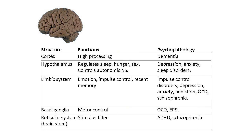Obsessive compulsive disorder and schizophrenia may also involve the limbic system. The basal ganglia is involved in motor control, and is maybe implicated in OCD and also in EPS — extrapyramidal symptoms. That's not actually a psychiatric disorder, but it's important to know because you sometimes see those problems as a side effect of antipsychotic medication.